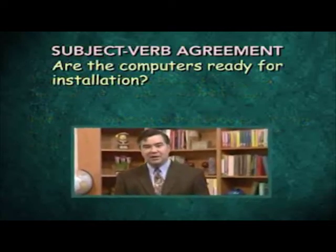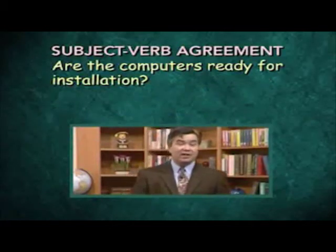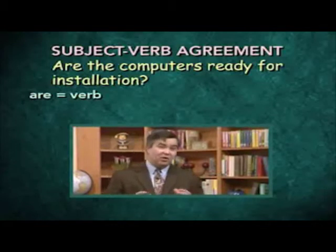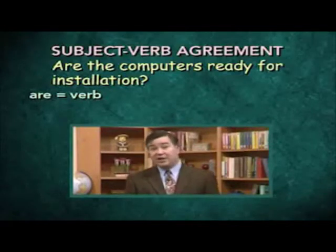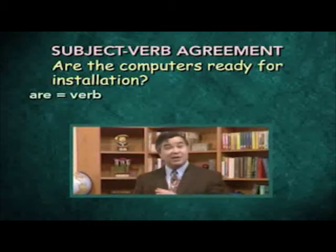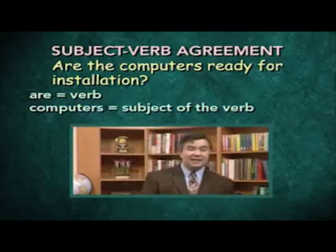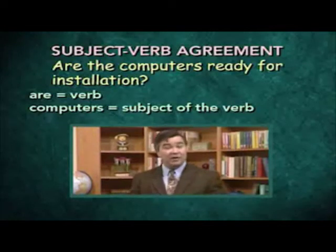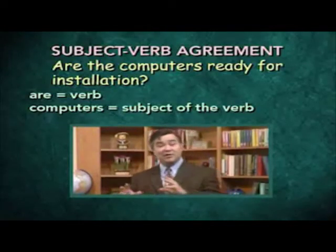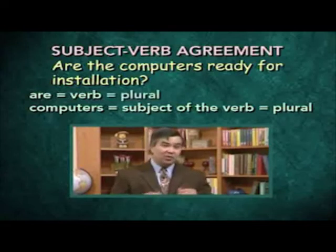Here are a couple of examples. 'Are the computers ready for installation?' Here the verb is the very first word in the sentence: 'are.' Since the verb comes first, obviously the subject must come later. The subject is the noun 'computers.' If we turned this sentence into a statement, it would read: 'The computers are ready for installation,' making it obvious that 'computers' is the subject of the verb 'are.' Since 'computers' is plural, the verb 'are,' which is also plural, is perfectly correct.